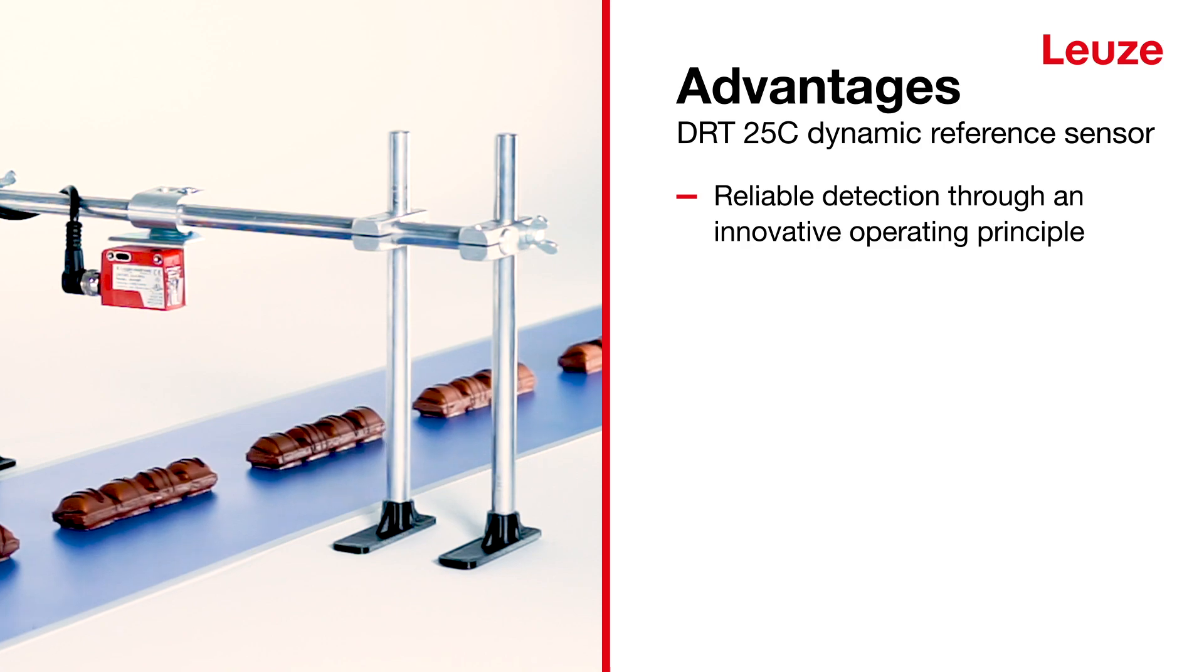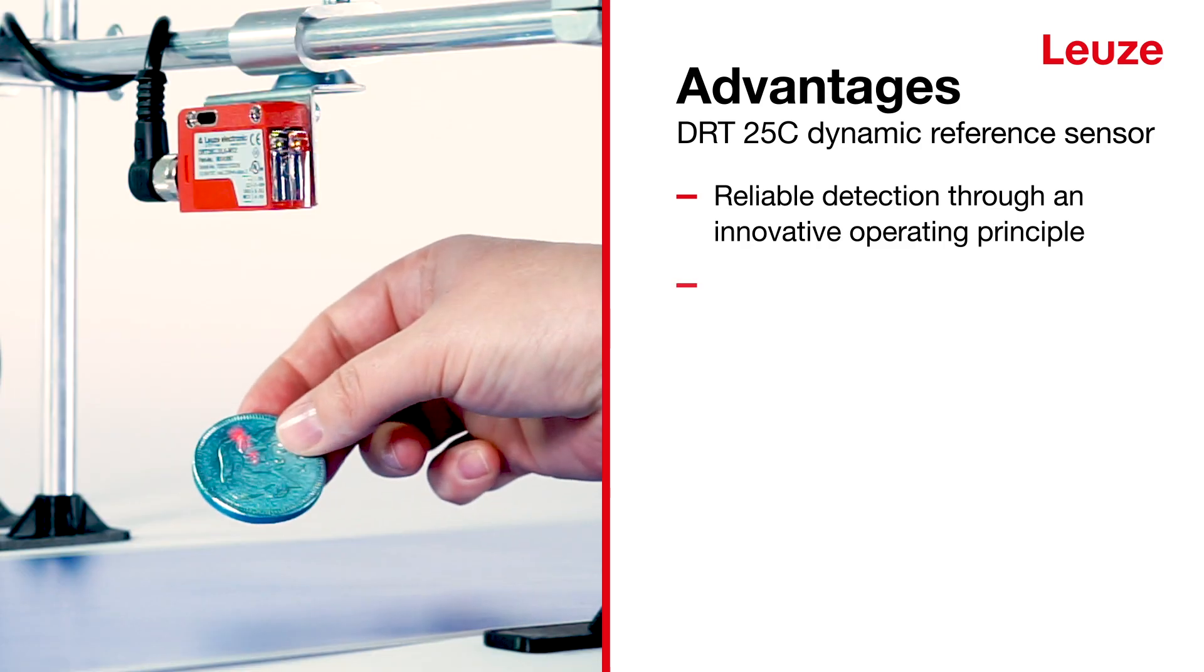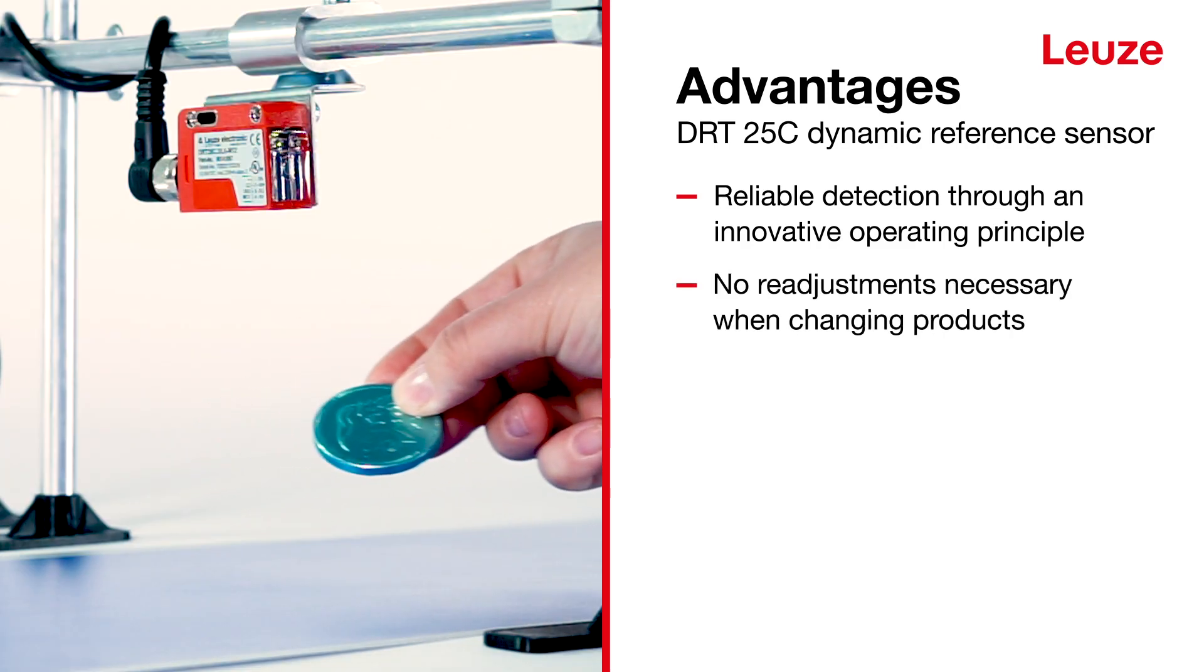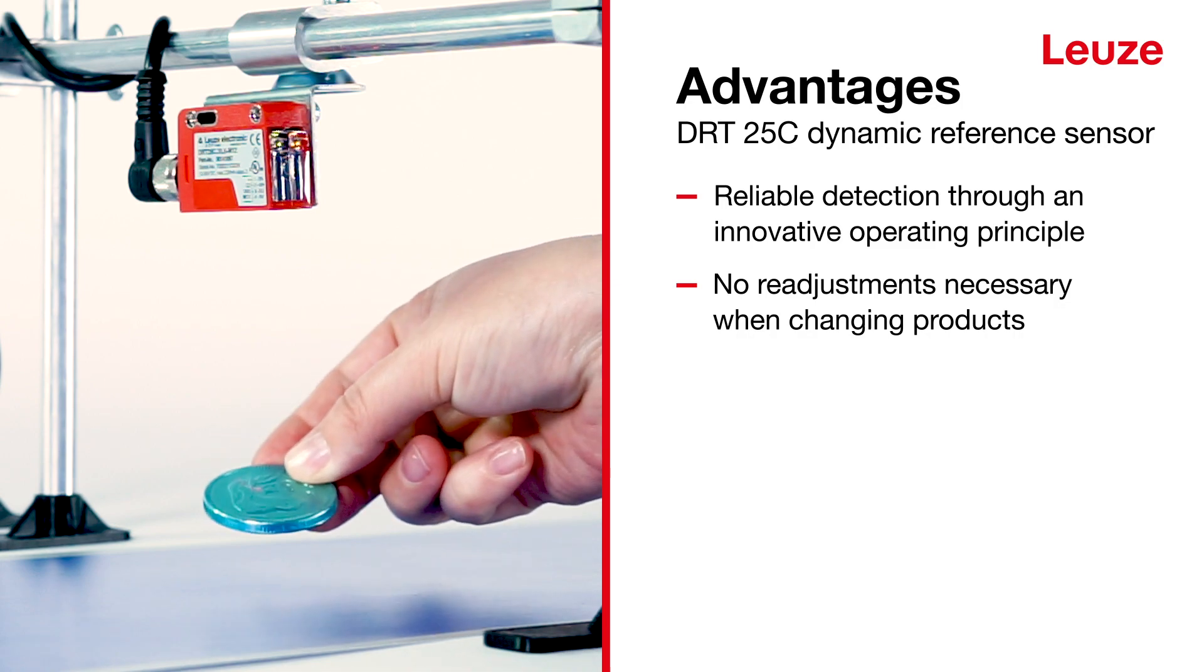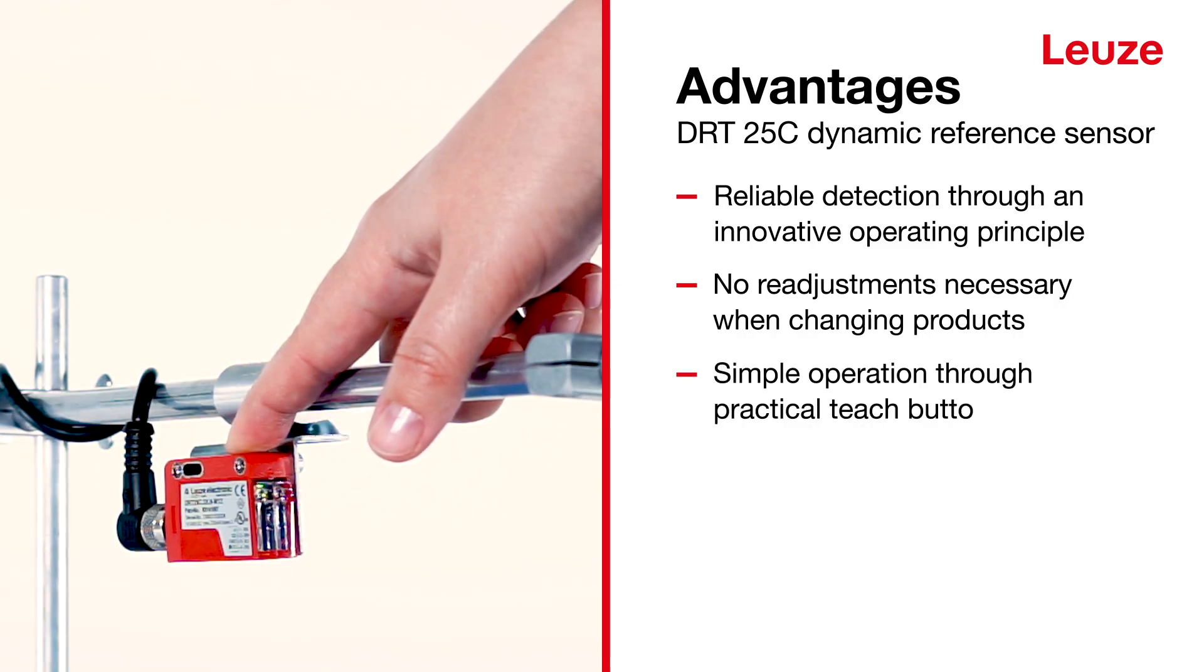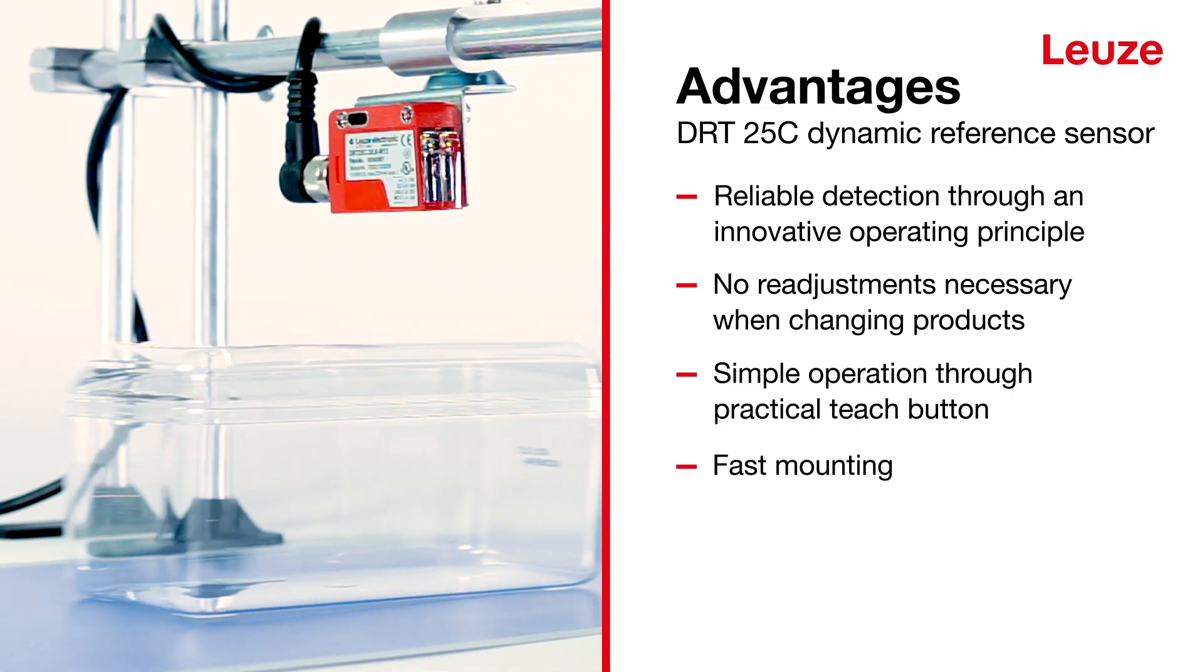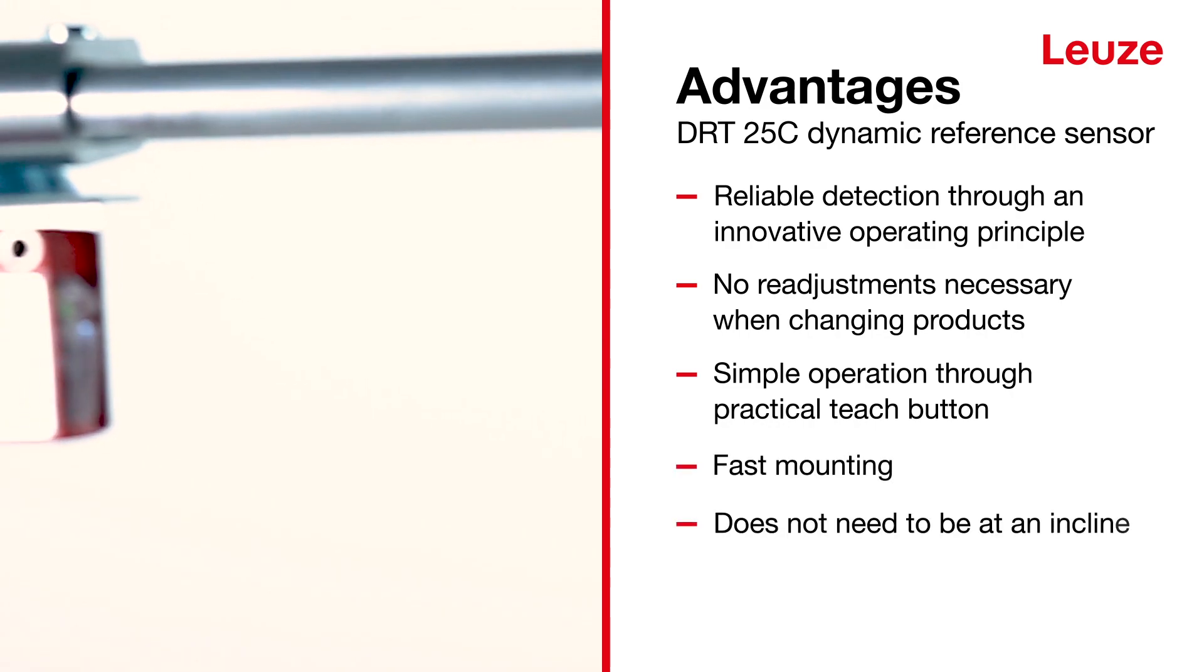Because it operates with the conveyor belt as a reference, readjustments are no longer necessary when changing products. With a practical Teach button, it is easy to operate, it is quick and easy to mount, and does not need to be installed at an incline.